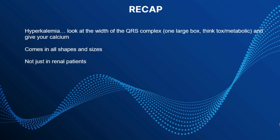Finally, the recap: when you see a QRS complex over one large box wide, always think tox or metabolic and give calcium — especially in bradycardic patients. Stabilize that myocardium with calcium. This rhythm comes in so many shapes and sizes and affects all types of patients, not just renal failure patients. If the words 'wide and bizarre' ever enter your mind, think hyper-K. Just because a patient doesn't have renal failure doesn't mean they can't be hyperkalemic. Calcium is key.